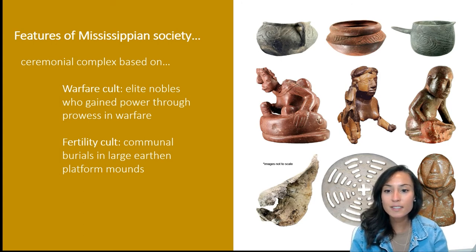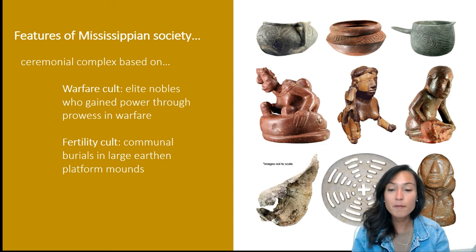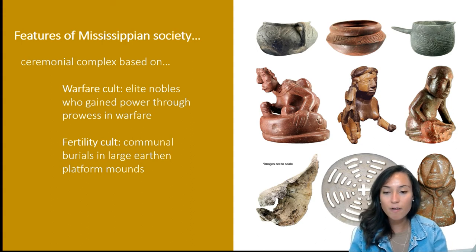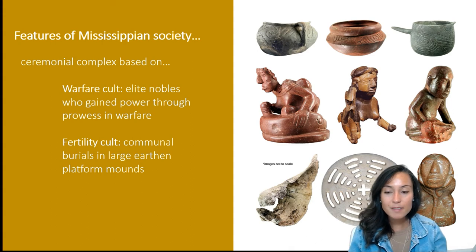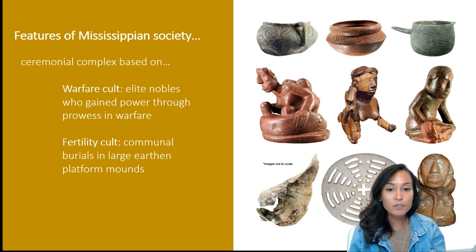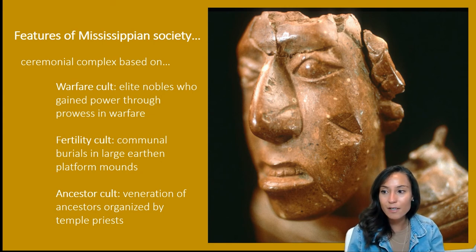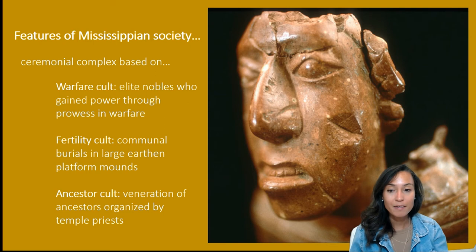Cahokian religion seems to have merged beliefs about life and death with the movement of the stars, sun, and moon. Specific deities were recognized as female goddesses, often depicted on small redstone sculptures. These goddesses are shown with the bones of the dead, a monstrous mythical serpent, and corn crops — offering a connection between life, death, and femininity, likely used to ensure a good harvest. We also see evidence for ancestor worship, seen through temple statuary representing men and women kneeling in death-like poses.